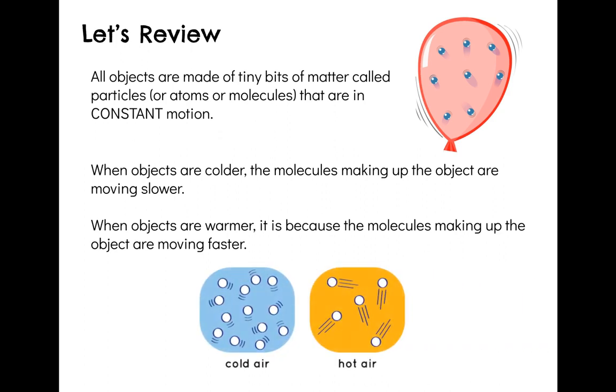So if we take our air example again, air, whether it is cold or hot, is still made up of the same matter. It's just that cold air is made up of molecules that are moving slower and hot air is made up of molecules that are moving faster. In this diagram you can see that the cold air, the molecules are closer together and in the hot air they're further apart.